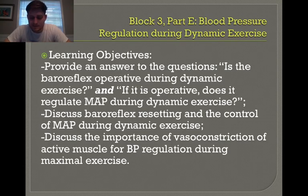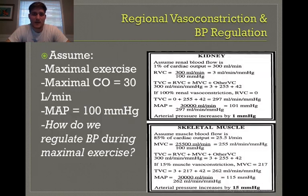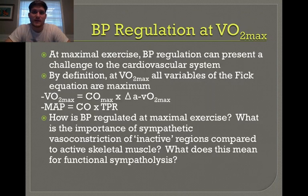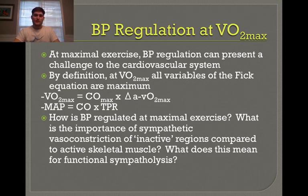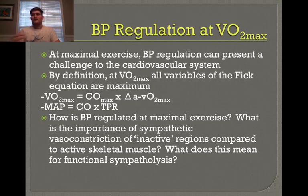Welcome back to part two of our discussion on blood pressure regulation during dynamic exercise. Last time we discussed the baroreflex response during physical activity and we said that as exercise intensity increases, so does blood pressure. We see this increase from light to moderate to vigorous physical activity, and the reliance on the vasculature to change mean arterial pressure becomes more evident at higher intensities. Today we're going to talk about what happens at VO2 maximum.